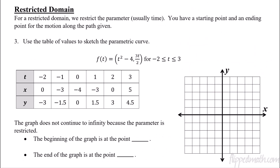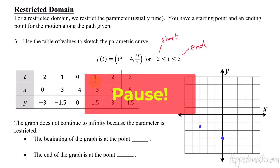The next problem has a restricted domain, which means we'll have a starting point and an ending point. Here's our function: x equals t squared minus 4, y equals 3t over 2, for t from negative 2 to 3. Negative 2 is the starting t value and 3 is the ending t value. It's easier to use nice whole numbers: negative 2, negative 1, 0, 1, 2, 3. I've filled in the calculations for you with the decimal values. Now let's graph it. The first point is (0, negative 3), then (negative 3, negative 1.5). Pause the video, fill in the rest of the graph, and let's see what you get.